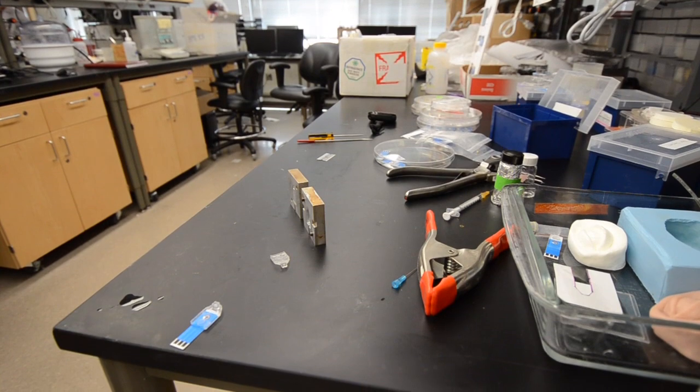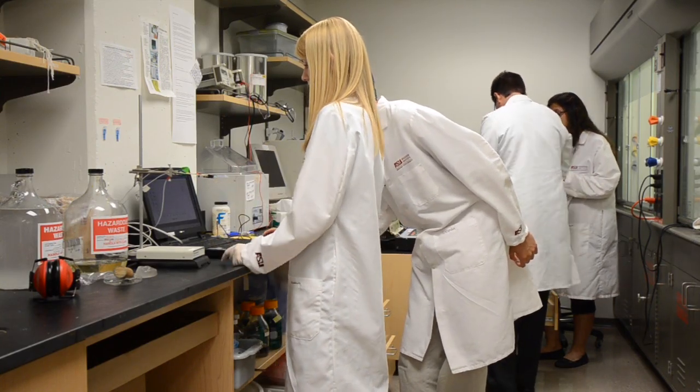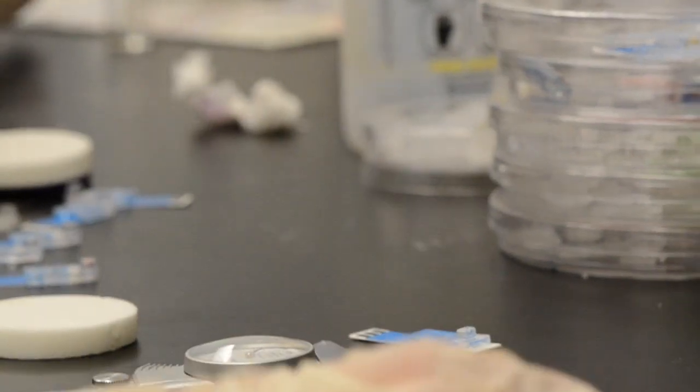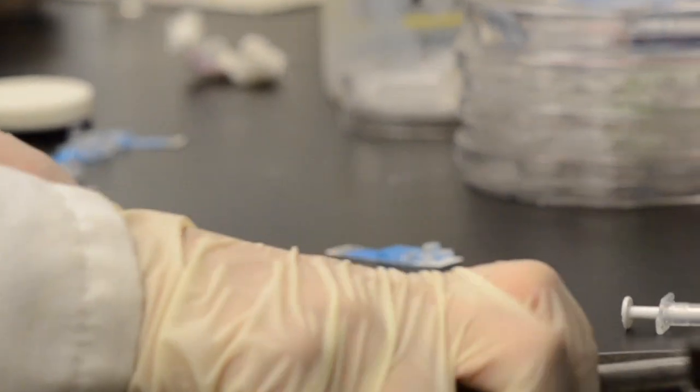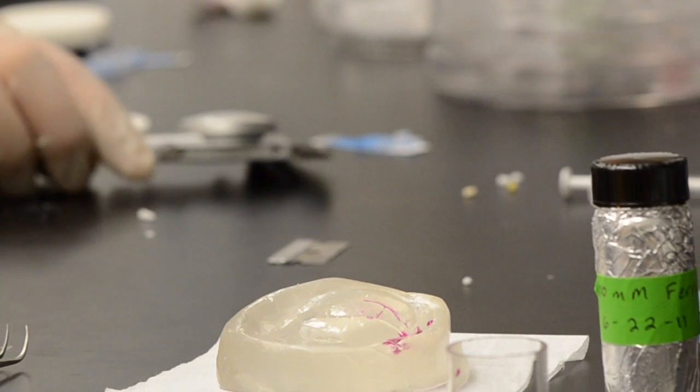So if there's a way to use tears instead of blood, then the idea is they could just touch the sensor to their eye and it would be a lot less painful and would hopefully be easier for them to do. So then diabetics would be able to measure their blood sugar more often and keep it within normal ranges.